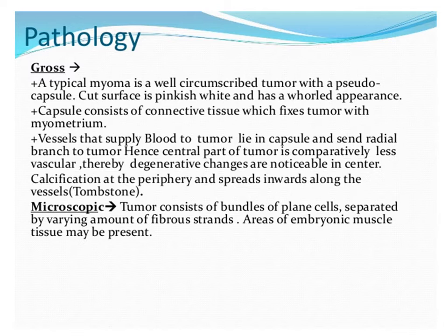Looking at gross pathology, a typical fibroid is a well-circumscribed tumor with a pseudocapsule. The cut surface is pinkish-white and has a whorled appearance. The capsule is made up of connective tissue which fixes the tumor with the myometrium. The vessels that supply blood to the tumor lie in the capsule and send radial branches to the tumor, so the central part is comparatively less vascular and degenerative changes are more prominent centrally.